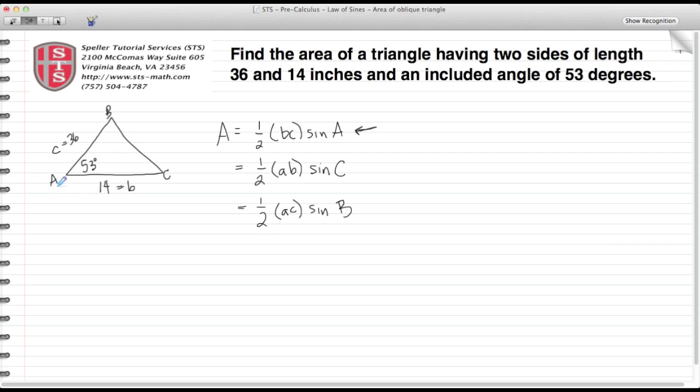Let's rewrite this over here, so I have one-half times B which is 14, times C which is 36, and all that's multiplied by the sine of 53 degrees.